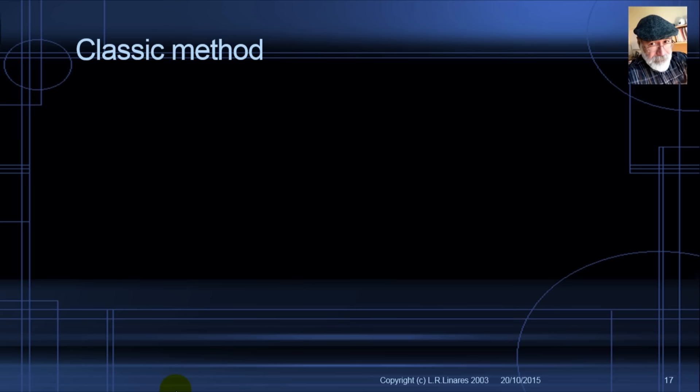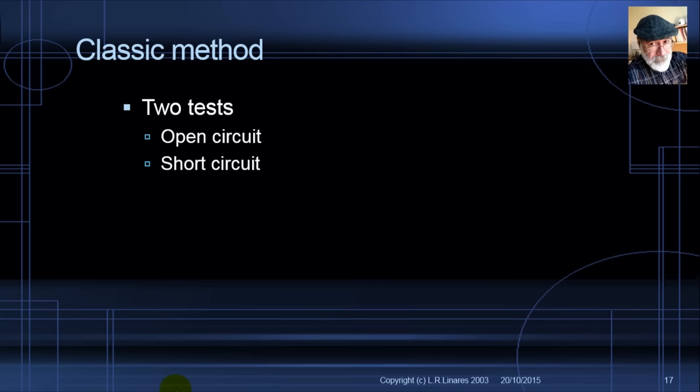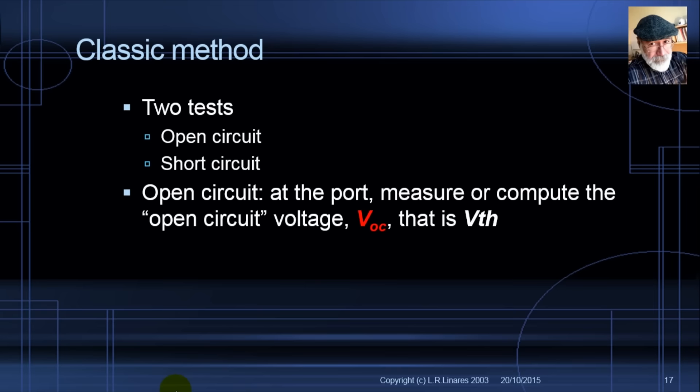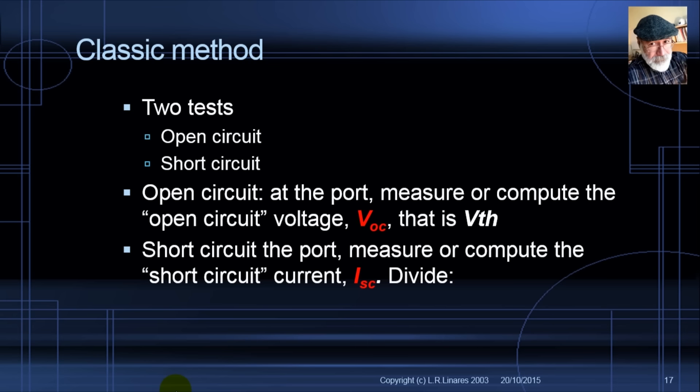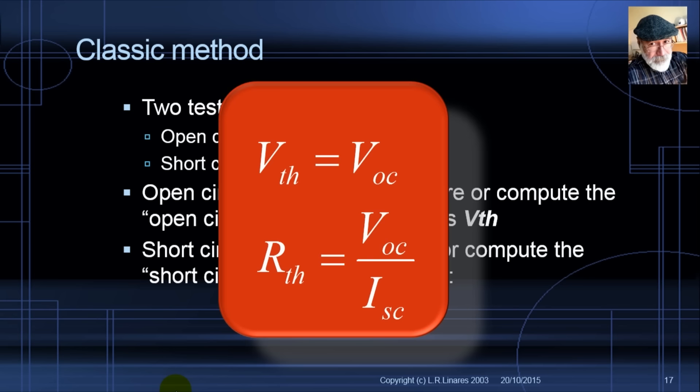Let's recap the classic method to find V_Thevenin and R_Thevenin — two tests. Open circuit test: open circuit the port, measure or compute VOC, and that is directly V_Thevenin. Short circuit test: short circuit the port, measure or compute the short circuit current I_SC, then VOC divided by I_SC gives R_Thevenin.